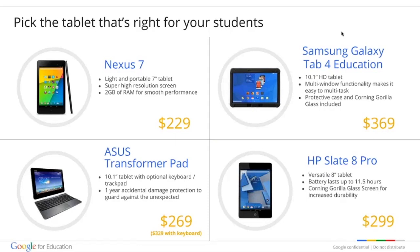At $229, the Nexus 7 is a great tablet at a practical price — portable enough for younger grades, with front and back cameras perfect for video and storytelling projects. The 10.1-inch Samsung Galaxy Tablet for Education is the first tablet Samsung designed expressly for the classroom, with a protective case and Corning Gorilla Glass for heavy daily use, plus multi-window functionality so students can watch a YouTube for Education video and take notes simultaneously. The 10.1-inch Asus Transformer Pad has an optional plug-in keyboard and a one-year accidental damage protection policy. The 8-inch HP Slate 8 Pro offers up to 11.5 hours of battery life, Gorilla Glass, and weighs just one pound.